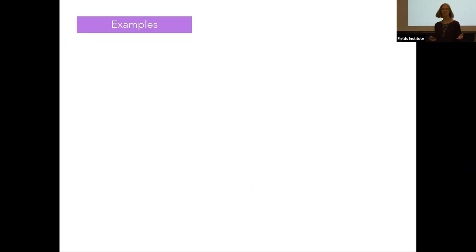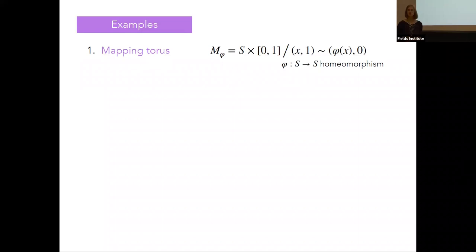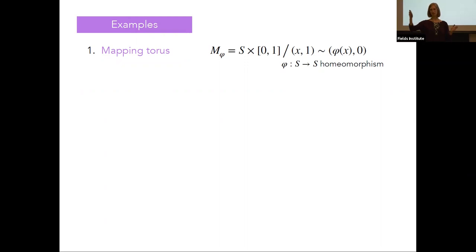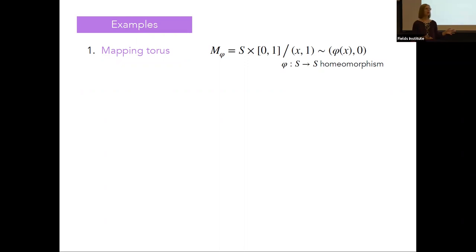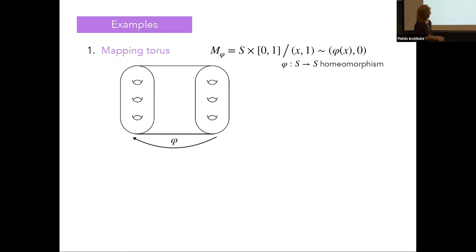Just in case you don't think about three-manifolds very often, I'll give you a few concrete examples to keep in your head as we go through this talk. The first example is the idea of a mapping torus. This is a three-manifold you build by taking your favorite surface, crossing it with an interval, and then gluing one end back to the start via your favorite homeomorphism of the surface. If you take the identity map, this just gives you a product manifold — your surface cross the circle — but otherwise you get more interesting three-manifolds depending on this choice of homeomorphism.